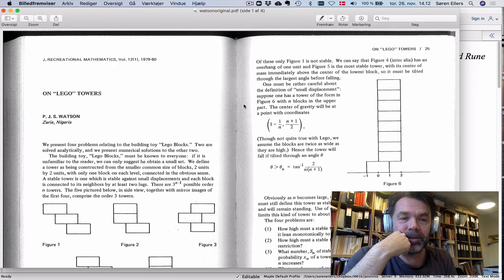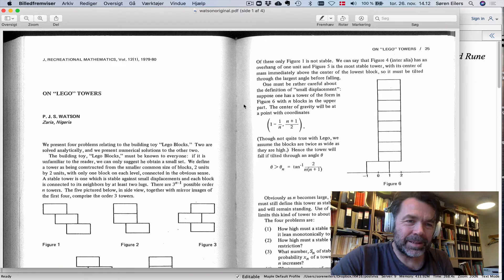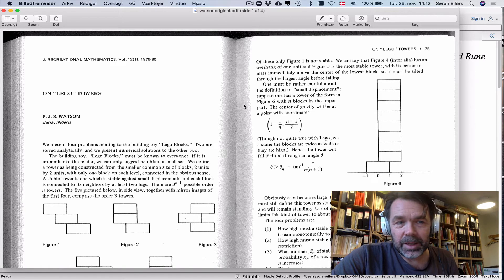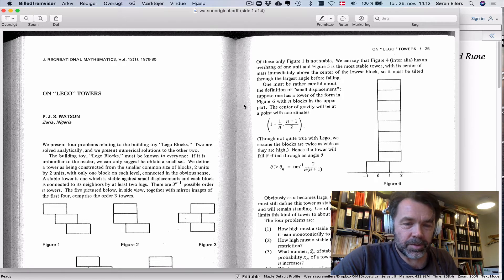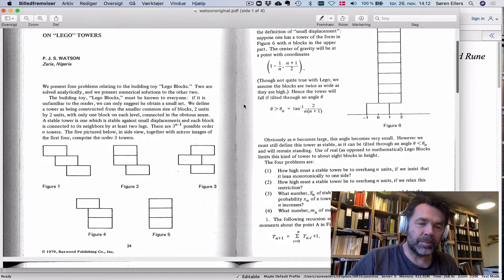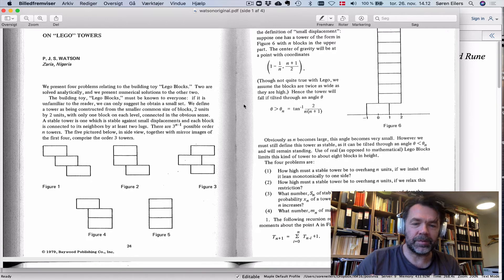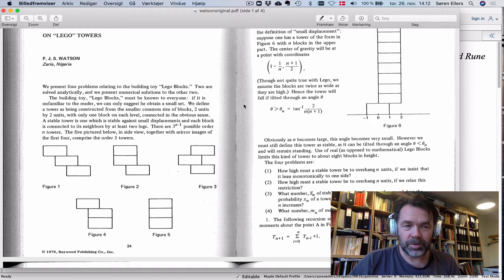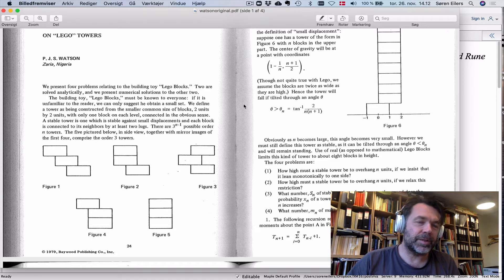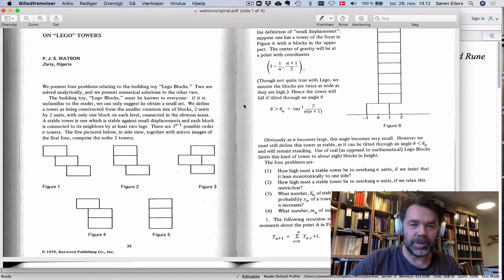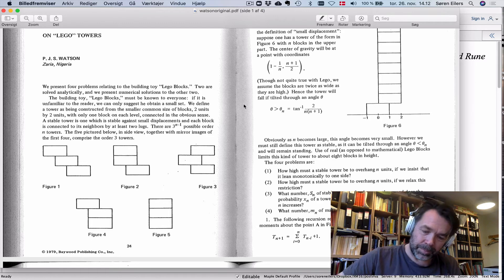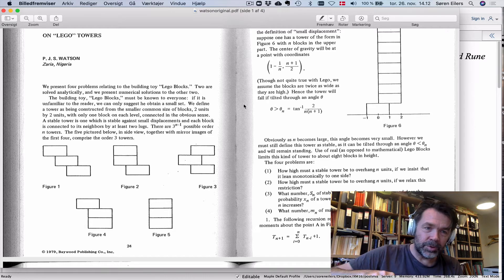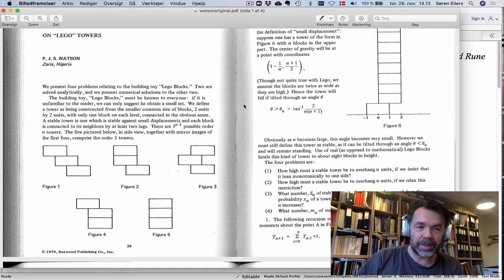It has to do with balancing Lego towers. The author Watson is interested in the situation where you have some Lego bricks that you think of as one-dimensional. But you put them in one layer and you're free to move the bricks left and right.